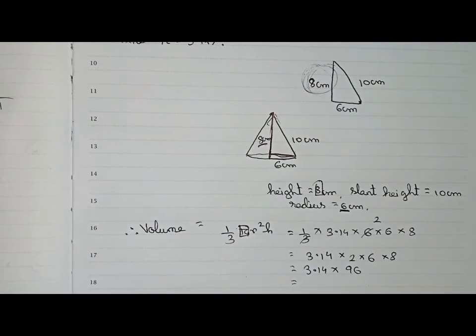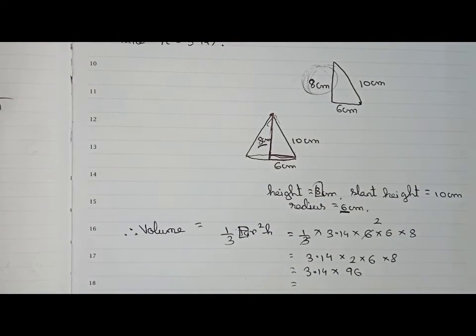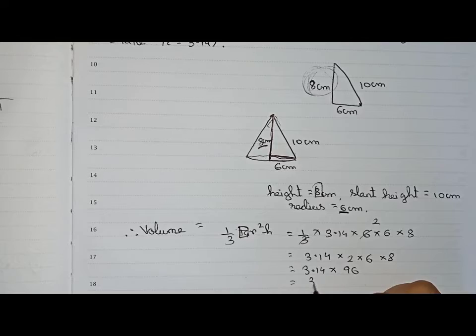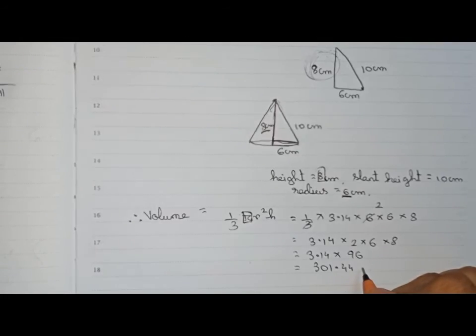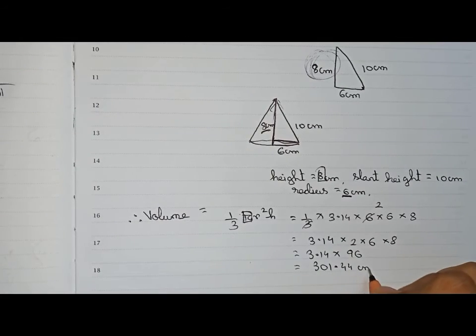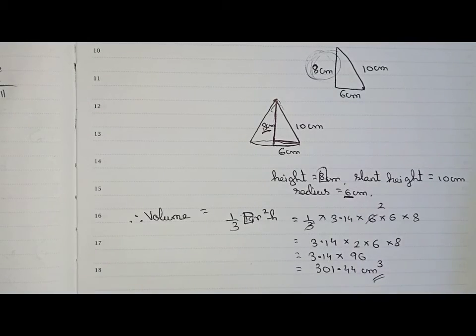Finally, 3.14 × 96 = 301.44. So the volume of the cone is 301.44 cm³.